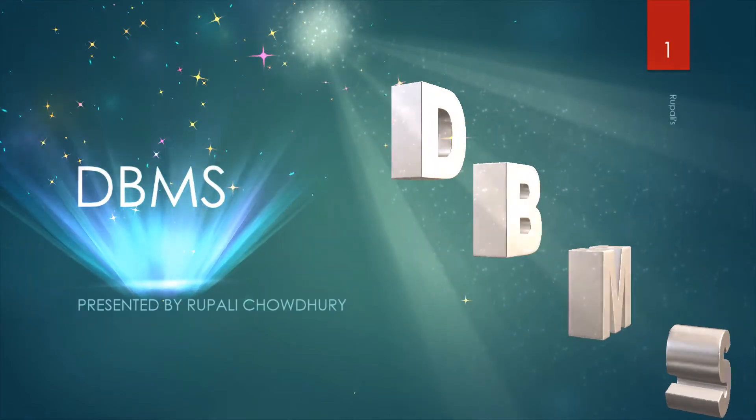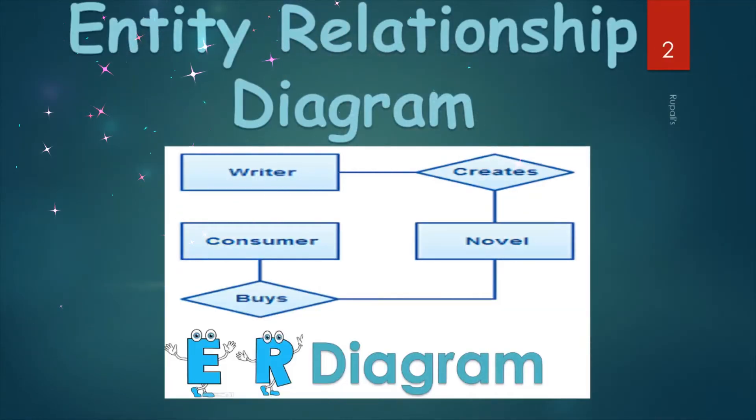Today our topic is Entity Relationship Diagram. An entity relationship model, or ER model, describes the structure of a database with the help of a diagram which is known as Entity Relationship Diagram or ER diagram. An ER model is a design or blueprint of a database that can later be implemented as a database. The main components of ER model are Entity Set and Relationship Set.